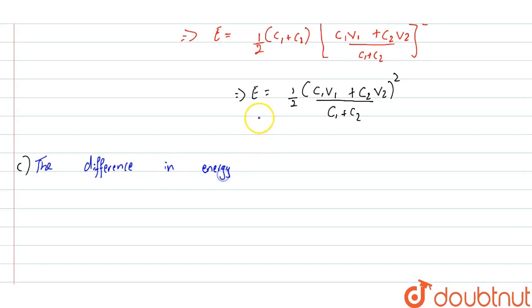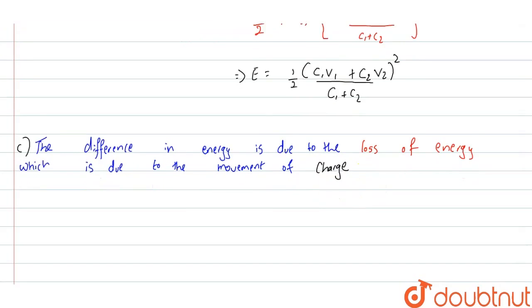The difference in energy: if you are wondering what is the difference of energy? The energy before they are connected and the energy after they are connected is different, and that is because of the loss of energy which is due to the movement of charge during the sharing of charge. With this, we can conclude our answer.